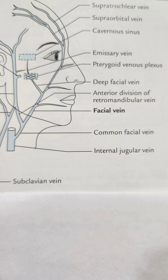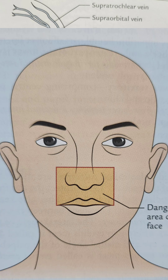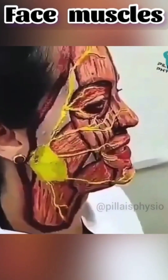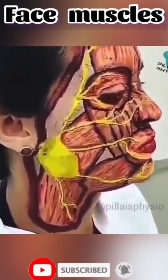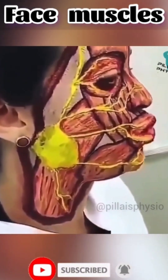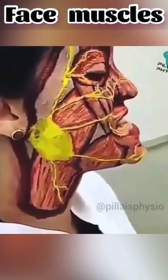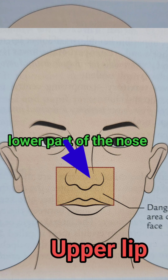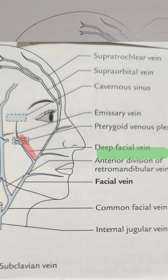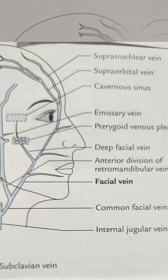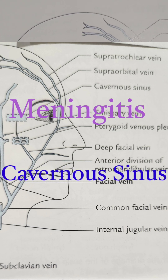This is because the facial veins and their communications are devoid of valves in their lumens, just like emissary veins. Since the facial veins rest directly on the muscles of facial expression, the movement of these muscles may facilitate the spread of septic emboli from the infected area of the lower part of the nose, upper lip, and adjoining part of the cheek in a retrograde direction through the facial vein, pterygoid venous plexus, and emissary vein into the cavernous sinus, leading to meningitis and cavernous sinus thrombosis.